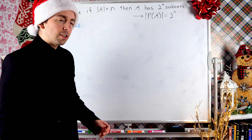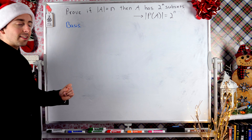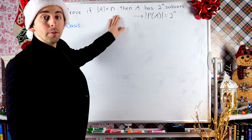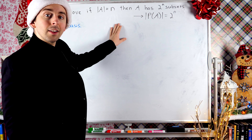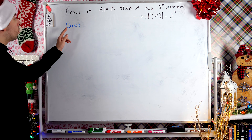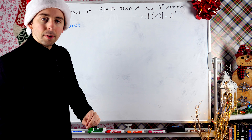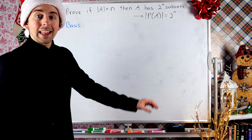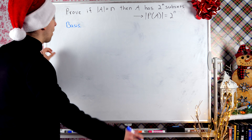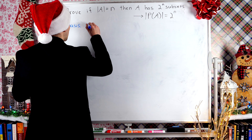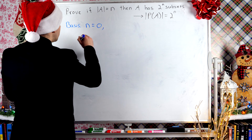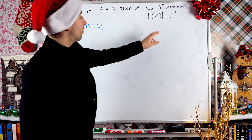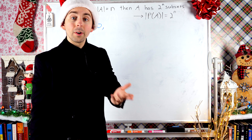Since we're doing induction, we've got to begin with our basis step. Here we're doing induction on the cardinality of sets, so the smallest possible cardinality is what we take care of in the basis step. What's the smallest cardinality a set can have? That would be zero. So our basis step is where n equals zero. We need to prove that if a set has zero elements, it has two to the power of zero subsets.